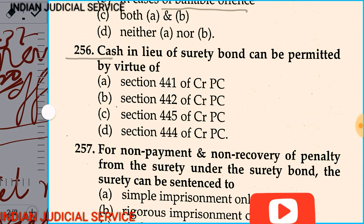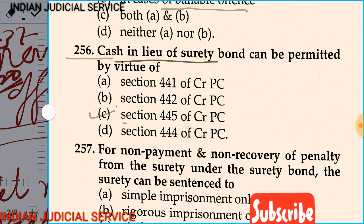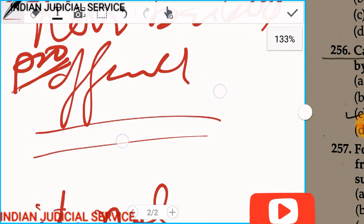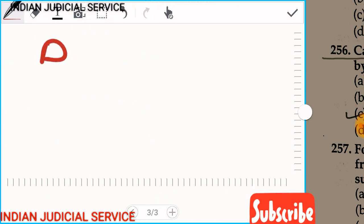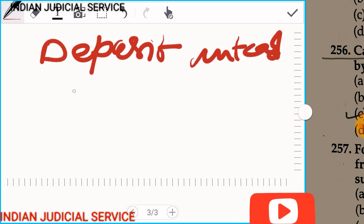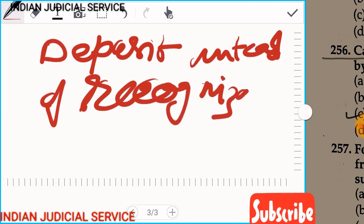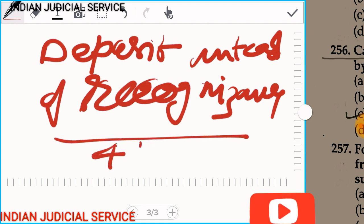Question number 256: The cash in lieu of a surety bond can be permitted by virtue of — option A: section 441, option B: section 442, option C: section 445, option D: section 444 of CrPC. The answer is option C: section 445, which provides for deposit instead of recognizance.